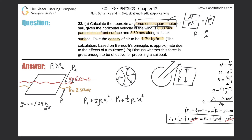Since I know that P1 will be larger than P2, I'm going to call P2 my zero value. So when I plug everything in, I'm essentially finding P1 — the net pressure. So: P1 plus one-half times the density of air times V1 squared equals one-half times the density of air times V2 squared.